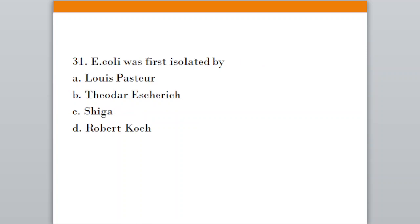Question number thirty-one: E. coli was first isolated by. Option A, Louis Pasteur; Option B, Theodore Escherich; Option C, Shiga; Option D, Robert Koch. The correct answer is option B, Theodore Escherich.